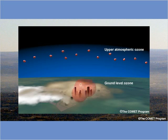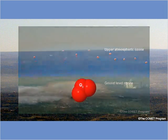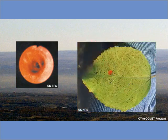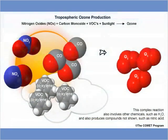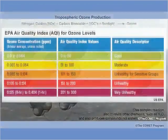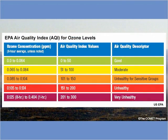Unlike ultraviolet-shielding upper atmospheric ozone, ground-level ozone is a harmful pollutant. Ozone is a powerful oxidizer that can inflame lung tissue and damage plants. It's readily produced in warm temperatures when sunlight interacts with nitrogen oxides and volatile organic compounds released by the combustion of carbon-based fuels. Eight-hour average ozone concentrations in the U.S. typically range from 40 to 150 parts-per-billion. Values below 50 parts-per-billion are considered healthy, while concentrations above 100 parts-per-billion are considered unhealthy.